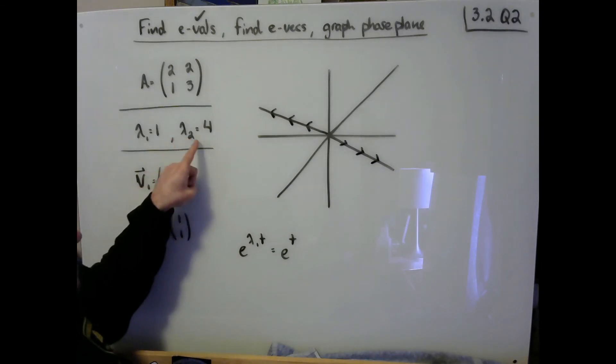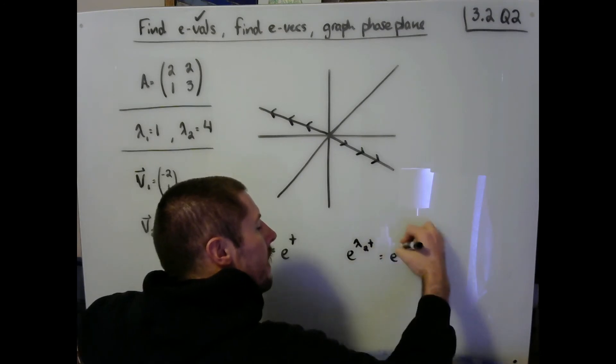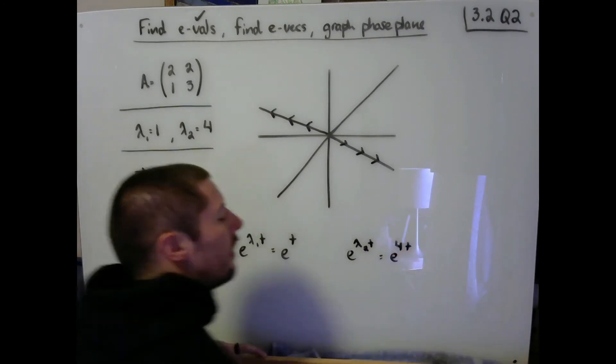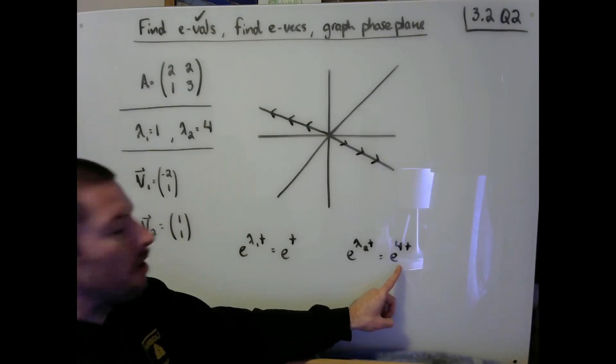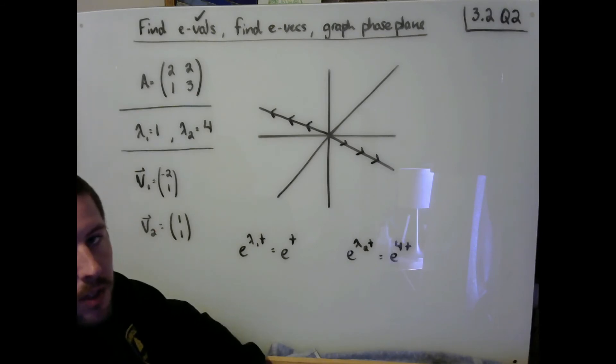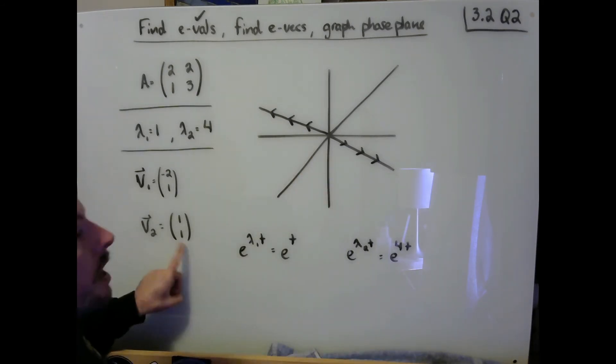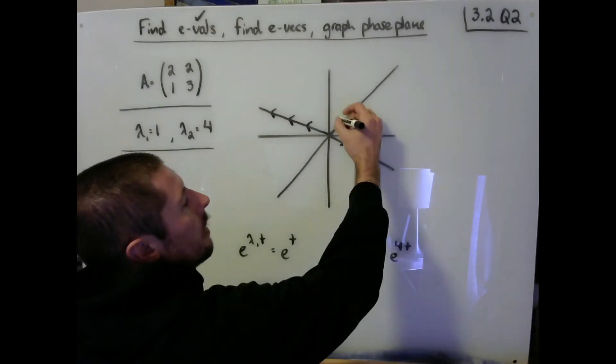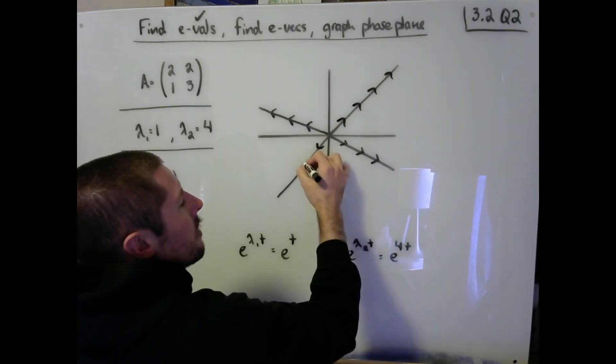Very similarly, I have lambda 2 of 4. That's going to result in terms in our solutions that are going to look like e to the 4t. This also represents exponential growth, but it represents a power of 4 faster growth than this guy over here, which will become relevant in a second. It seems like as well as the arrows that we drew on this guy, we should also be experiencing growth or source type behavior along the 1-1 eigenvector line. So these are the two easy parts of my phase plane.